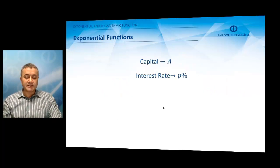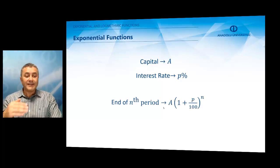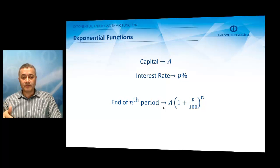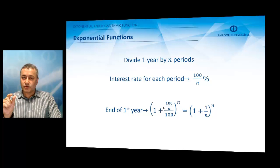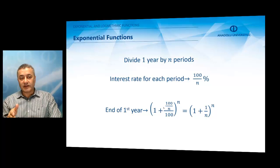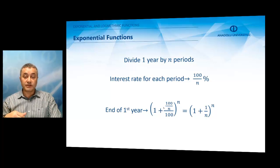Let's consider an example. Let us invest our money, the amount of which is denoted by A, at an interest rate of p percent for a certain period. At the end of the nth period, our money will become A(1 + p/100)^n. Assume that one year is divided by n periods. If we make the periods smaller and smaller, we assume we are going to make more money. When one year is divided by n periods, the interest rate for each period will be 100/n percent. At the end of first year, if we invest 1 lira, we are going to earn (1 + 1/n)^n lira.